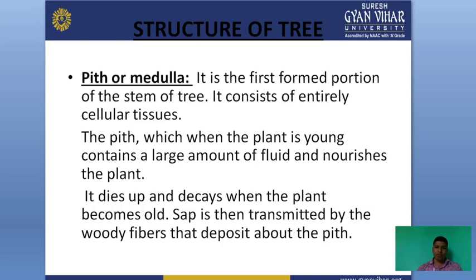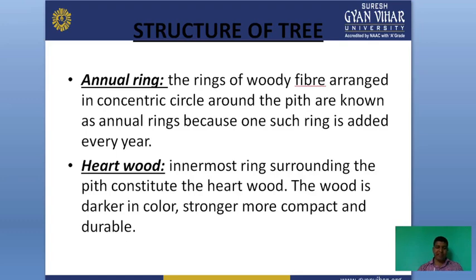The pith is the first portion of the stem of the tree. It consists entirely of cellulite tissue. When the plant is young, the pith contains a large amount of fluid and nourishes the plant. It dries up and decays when the plant becomes old, and the sap is then transmitted by the wood fiber deposited about the pith.